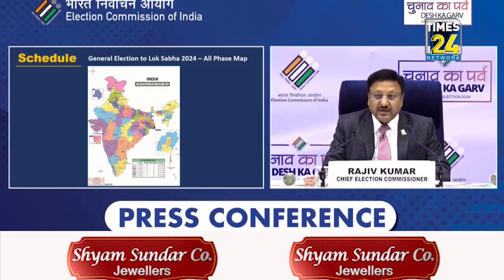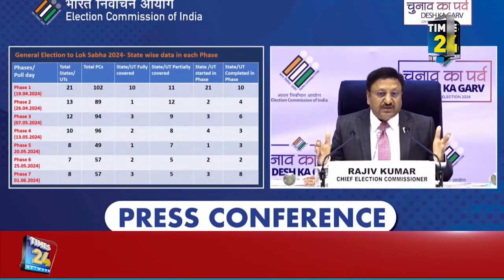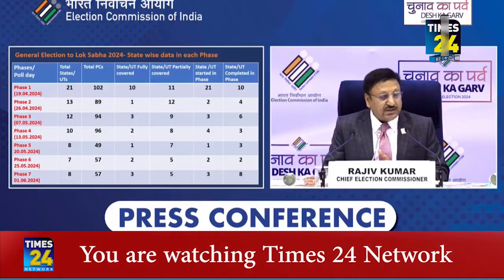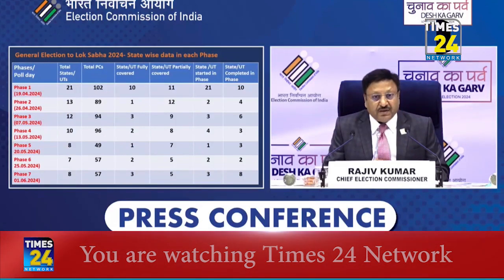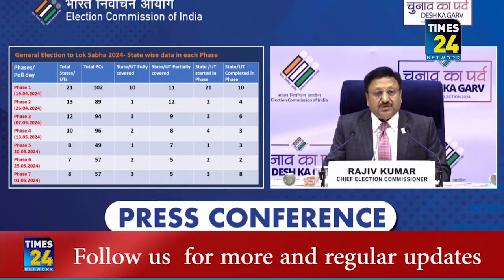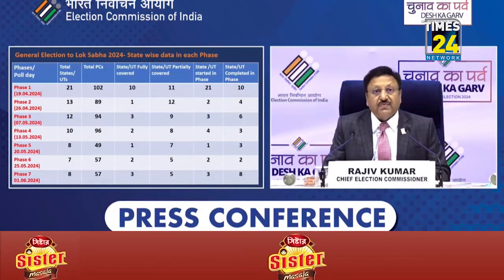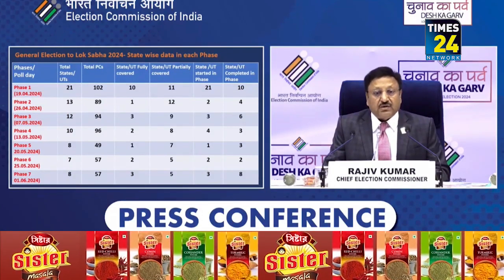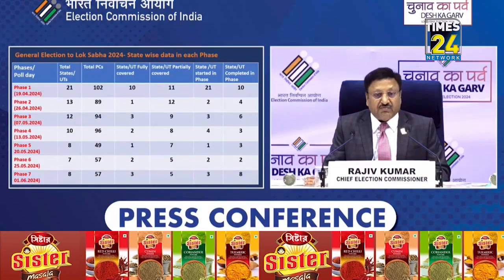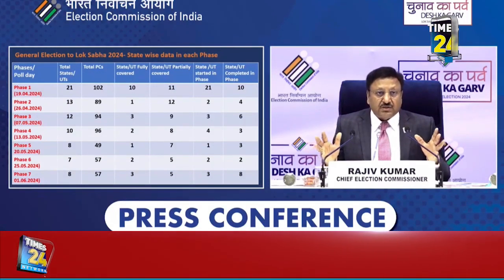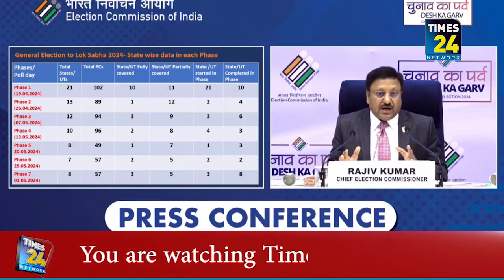We have also tried to give a good phase-wise picture and snapshot: Phase 1 mein 102 constituencies, Phase 2 mein 89, Phase 3 mein 94, Phase 4 mein 96, then 49, 57, 57. So we will start with 102, the largest.